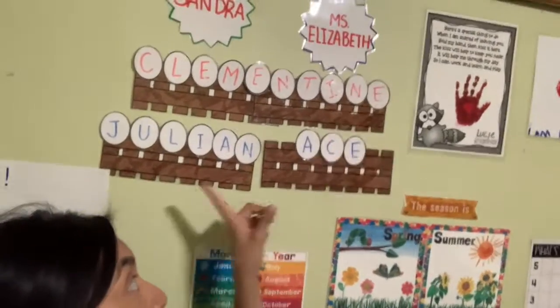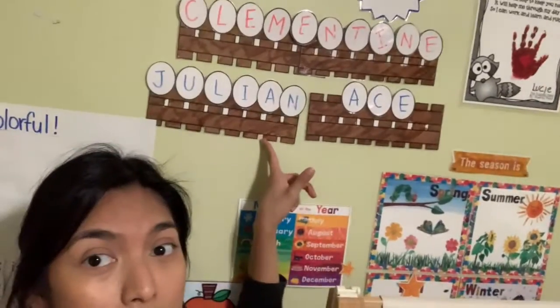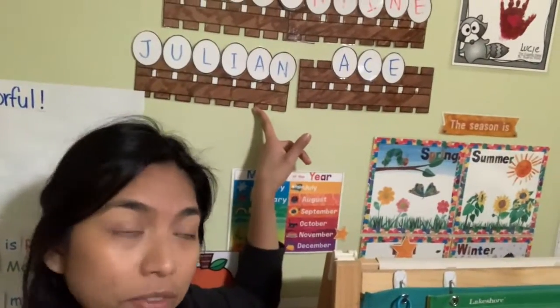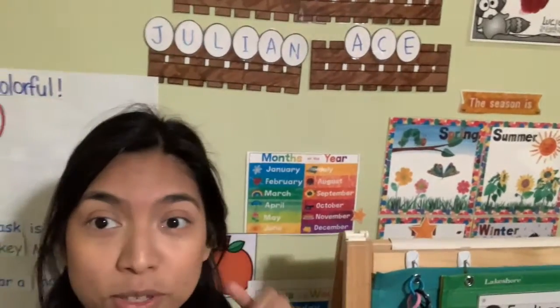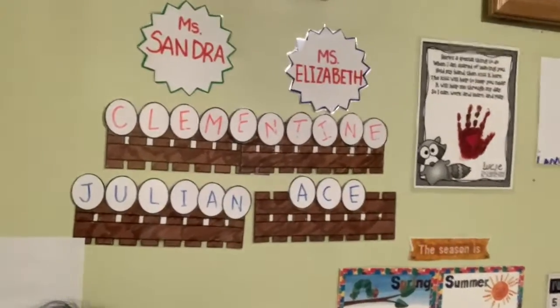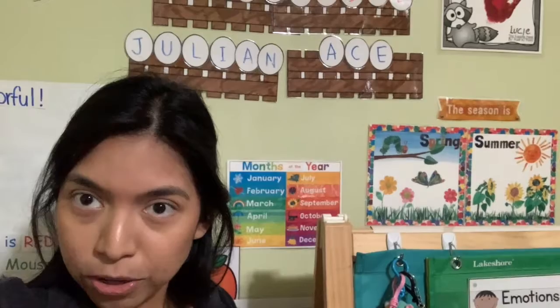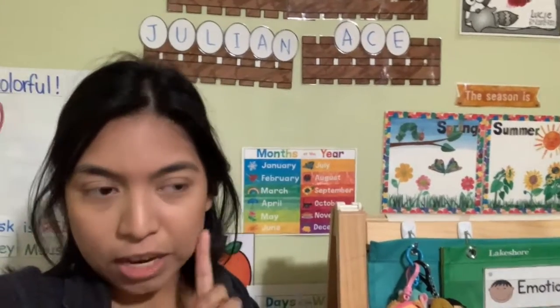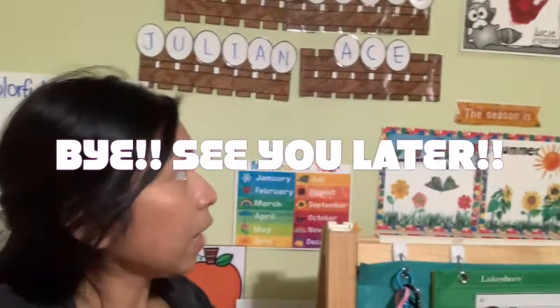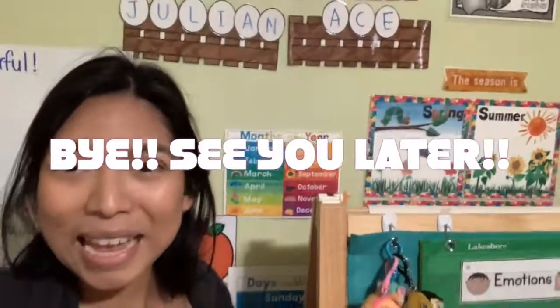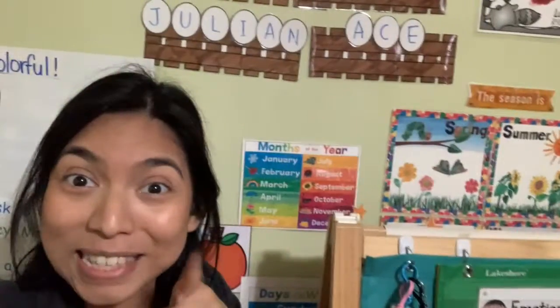So ten is a bigger number than three, and ten is also a bigger number than six — for Julian, right? So that's what we're going to do today, just a little bit of counting how many letters are in your name. Don't forget, you've got to keep practicing how you spell your name, what's the first letter of your name, and you have to count the letters of your name. Hopefully I'll see you guys later!